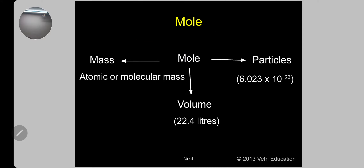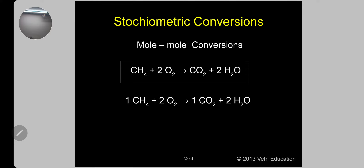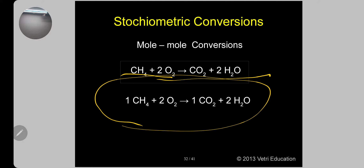We will now go for problems. Conversions: mole to mole, mole to mass, mole to volume — all can be done. Mole-mole conversion example: CH₄ + 2O₂ → CO₂ + 2H₂O. This is mole-mole conversion — 1 mole methane reacts with 2 moles oxygen to give 1 mole CO₂ plus 2 moles water.